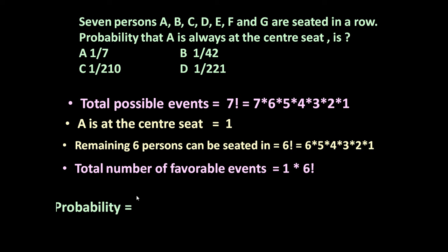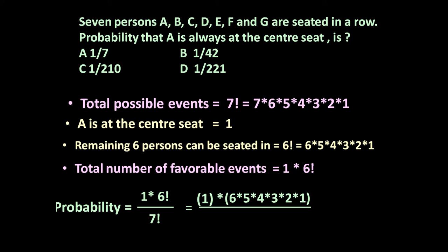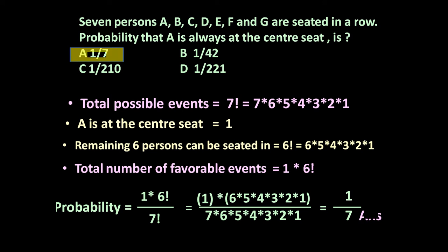So the required probability is equal to total number of favorable events — that is 1 × factorial 6 — divided by total number of possible events, which is factorial 7. This is equal to (6 × 5 × 4 × 3 × 2 × 1) divided by (7 × 6 × 5 × 4 × 3 × 2 × 1), which equals 1/7. So the answer is 1/7.